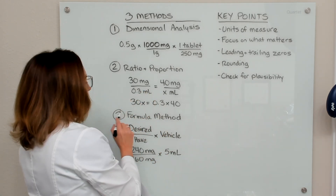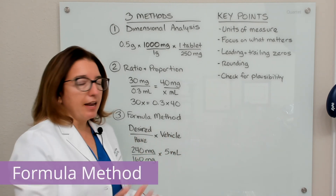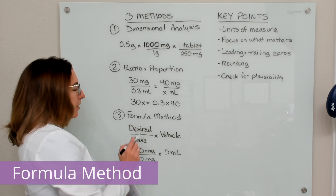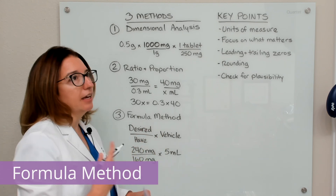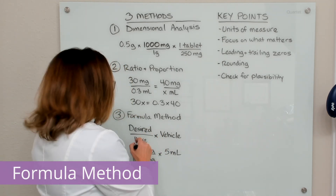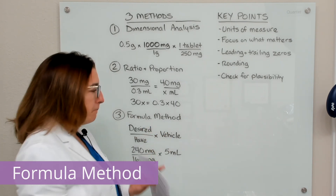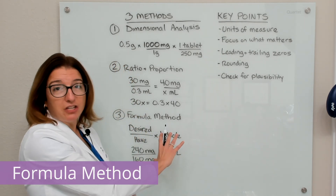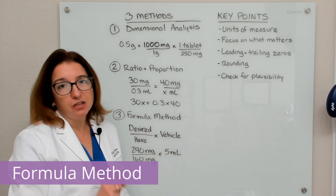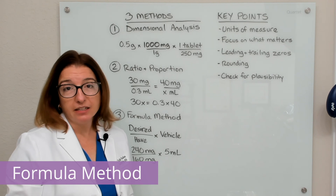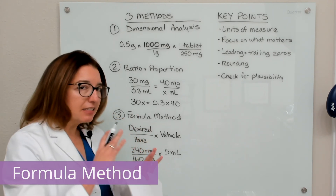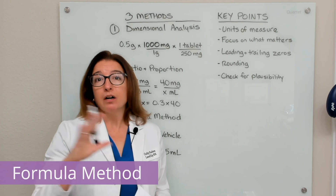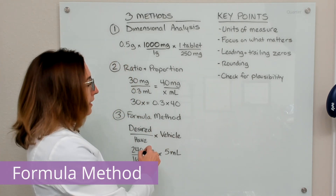The last method is the formula method, which has the following formula: desired over have times vehicle. So this is the desired dose over the dose you have, and the vehicle is the form and amount that that dose comes in. This is a very basic formula, and for very basic dose calculation problems it is an efficient way to solve the problem. However, this method cannot be used with more complicated dose calculation problems. So if your school sticks to very basic problems you can use this, but if your school gets into more complicated problems, this will not be an option for many of those problems.